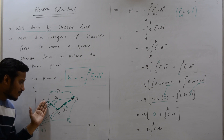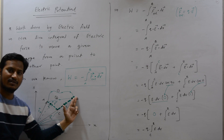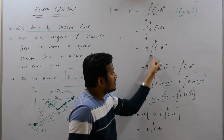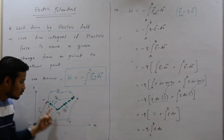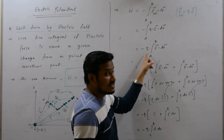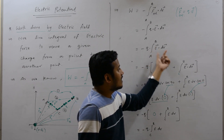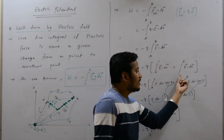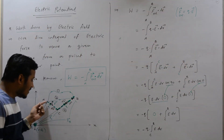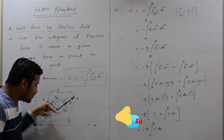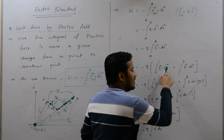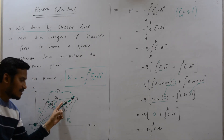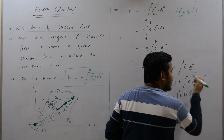The behavior of the electric field from A to C and from C to B are both different. That is why we separate the integral from A to B into: integration from A to C plus integration from C to B. In path A to C, the direction of E and the direction of dr are perpendicular to each other, meaning the angle between E and dr is 90 degrees. In path C to B, the direction of E and direction of dr are in the same direction, so the angle between E and dr is 0 degrees.